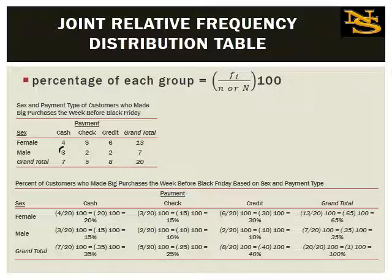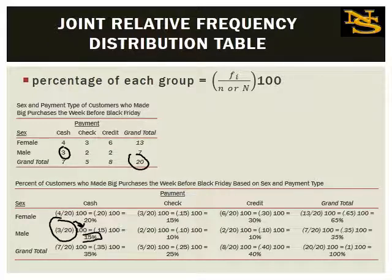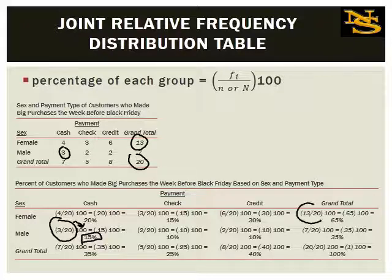I'm not going to require manual calculations — I'll show you how to do this in Excel — but I want you to understand where the numbers come from. So 13 out of 20 customers were female, meaning we can predict 65% of big-spending customers will be female. That's richer information you can use to make predictions across time.